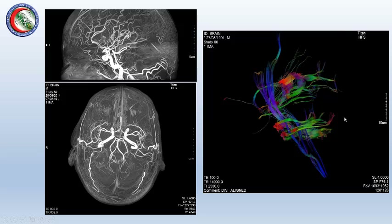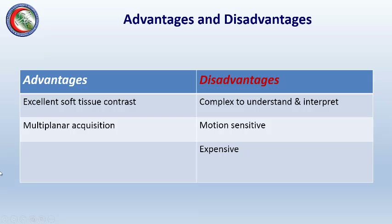MRI tractography is a very advanced technique used to image the fiber tracts inside the brain, helping neurosurgeons plan their brain surgeries. Advantages of MRI include excellent soft tissue contrast and the ability to acquire images in different planes. The main disadvantages are that it is complex to understand and interpret, motion sensitive, and relatively expensive.